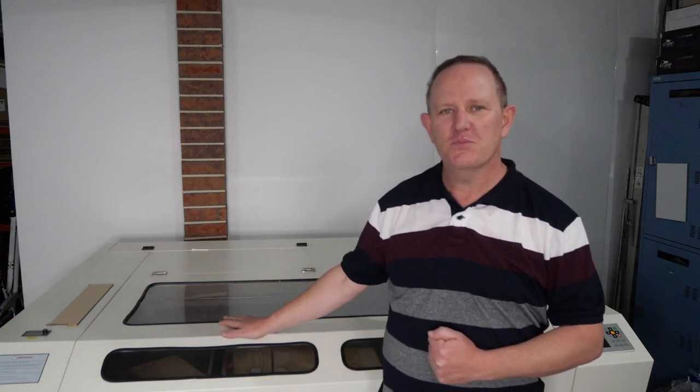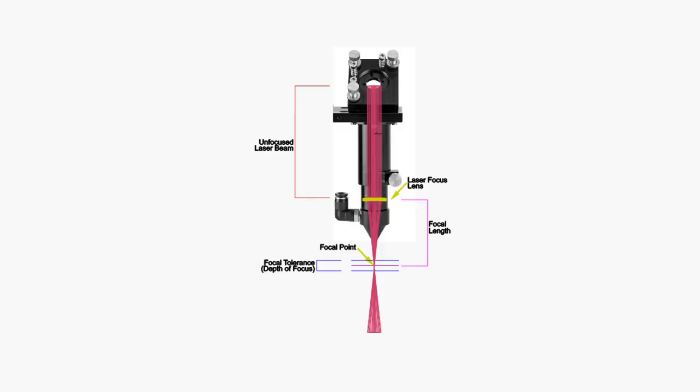The machine I'm using for this demonstration is a 130 watt CO2 laser machine with a 20mm diameter lens. So before we go too far, let's have a look at some of the terminology that I'm going to refer to.